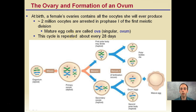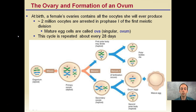Regarding the ovary and the formation of an ovum: at birth, female ovaries contain all the oocytes she will ever produce — about two million oocytes, arrested or paused in prophase 1 of the first meiotic division. The egg cells are called ova, or a single ovum, and this cycle repeats about every 28 days as one is released. So at birth, every female already has all the eggs she'll ever have for her entire life.